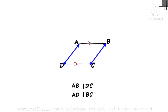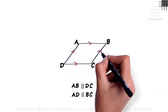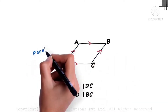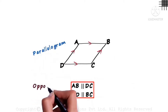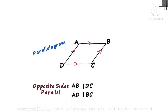Next, AD is parallel to BC. Those two lines also do not intersect each other. So, in a parallelogram, the opposite sides are parallel: AB parallel to DC, and AD parallel to BC.